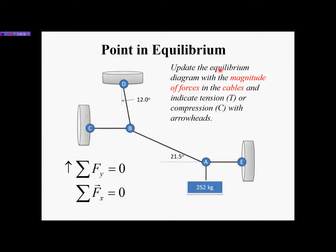The problem statement says: update the equilibrium diagram with the magnitude of the forces in the cables and indicate tension or compression with arrowheads. When we draw the free body diagram of joint A and joint B — those are the only two we need — we will replace the support cables with forces. A free body diagram is a part of a structure where you cut it away and replace all the supports with forces.